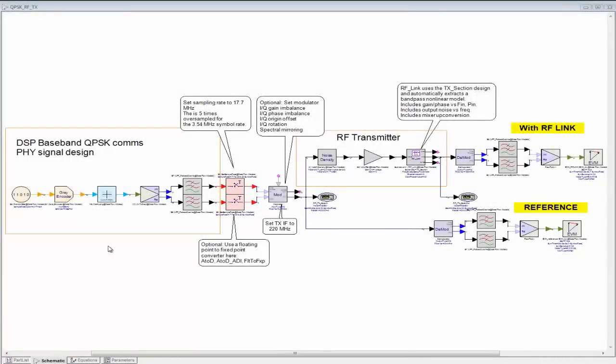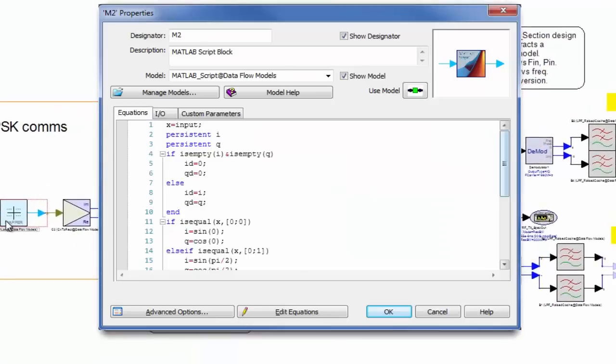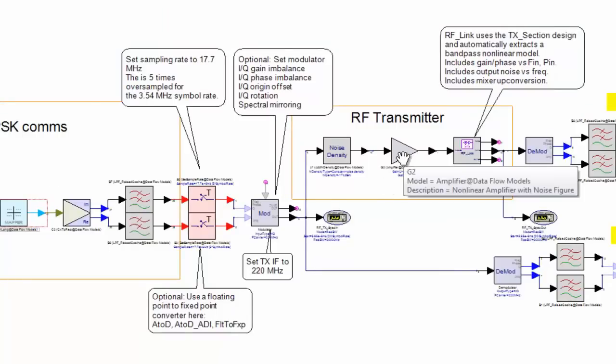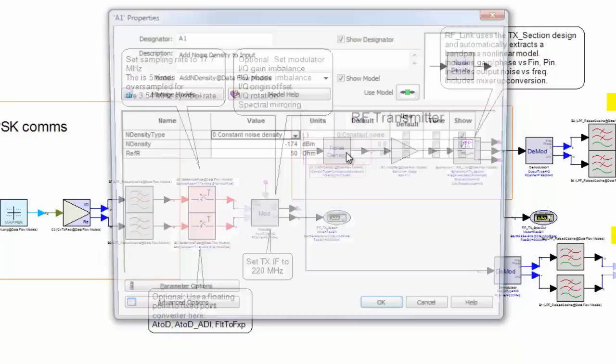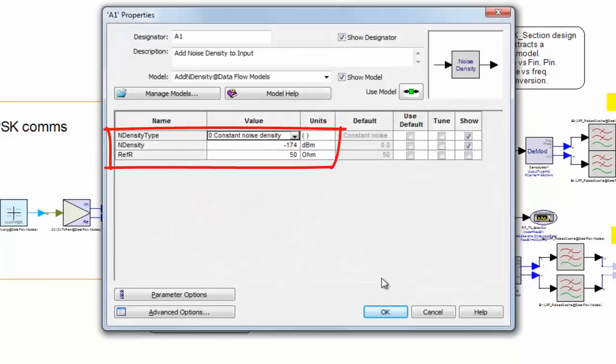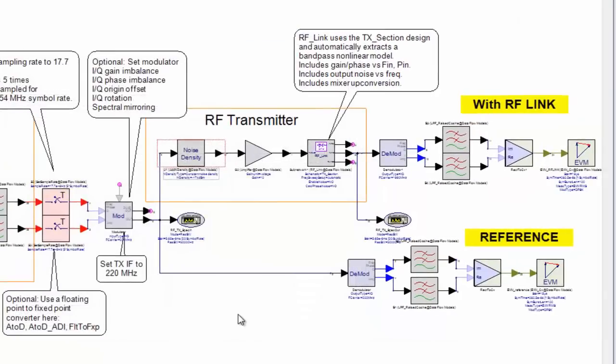Here is a typical end-to-end communication system consisting of both baseband and RF blocks. The SystemView Data Flow Simulator is used to explore which algorithms, component specs, and environmental conditions have an impact on system-level performance such as bit error rate and error vector magnitude.